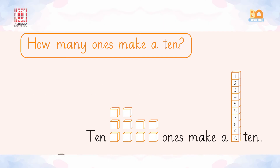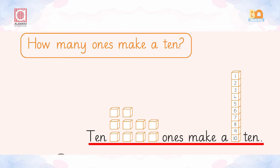Now let us count these blocks: 1, 2, 3, 4, 5, 6, 7, 8, 9, 10, 11, 12, 13, 14, 15, 16, 17, 18, 19, and 20. So we are having 20 blocks. You know that 10 ones make a 1-ten. When we have 20 blocks, it means we have 2 tens.